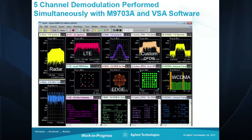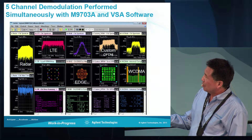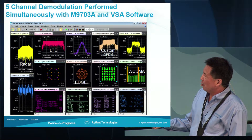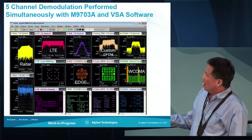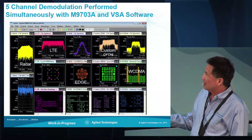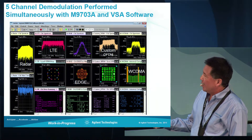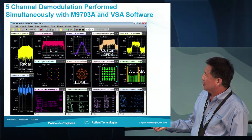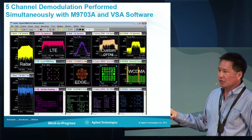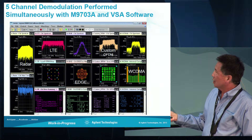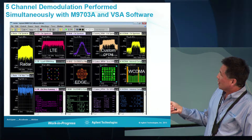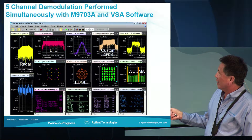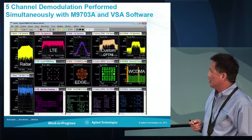These are the five signals captured and digitized with the M9703 digitizer. Starting on the left, one signal was a radar signal — showing the spectrum and the pulsed nature. To the right is an LTE signal showing spectrum, constellation, and error vector magnitude. Next is an EDGE emitter with spectrum, constellation, and EVM. We also had a custom OFDM signal showing constellation and EVM, and finally a WCDMA signal showing spectrum and code domain power characteristics.